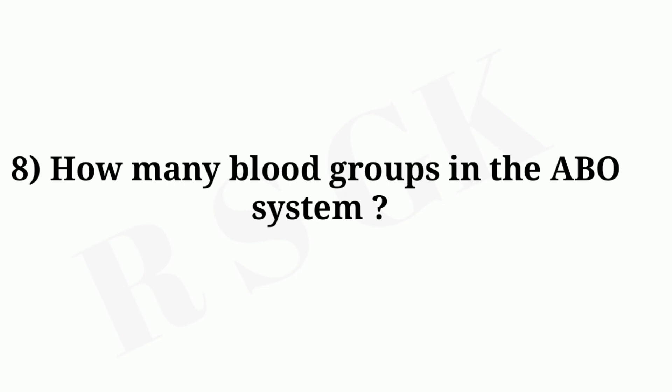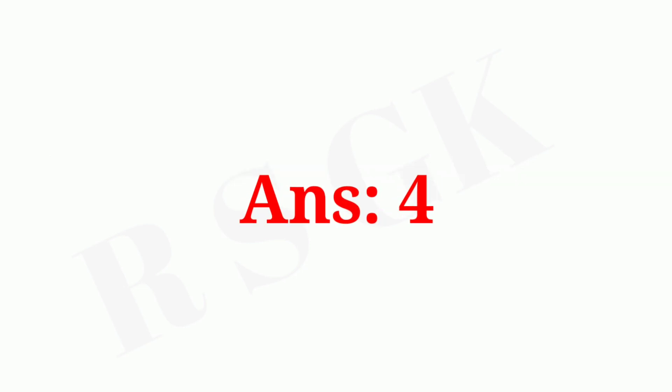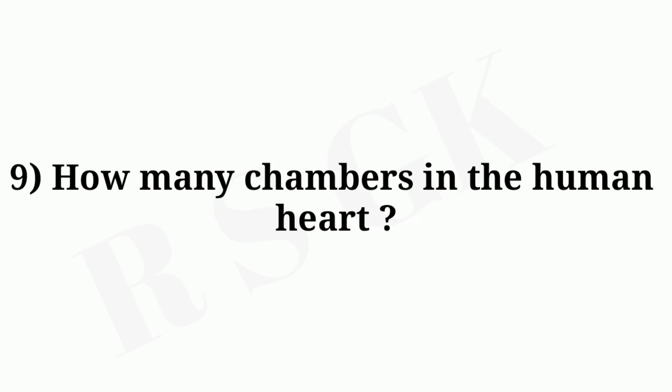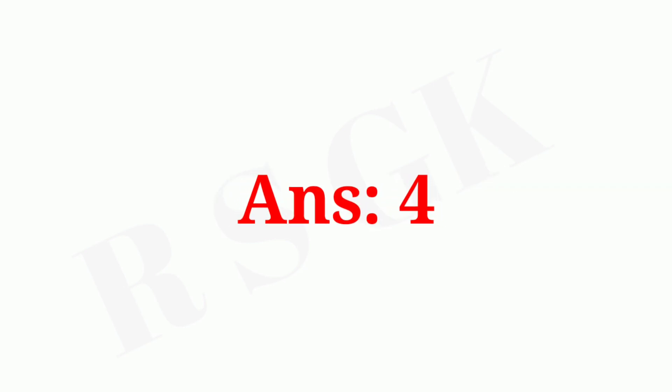Question number eight: how many blood groups are in the ABO system? Answer: four. Question number nine: how many chambers in the human heart? Answer: four.